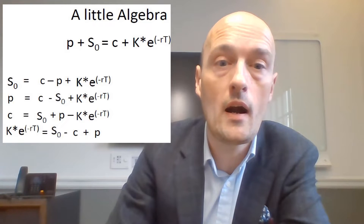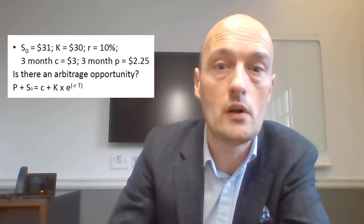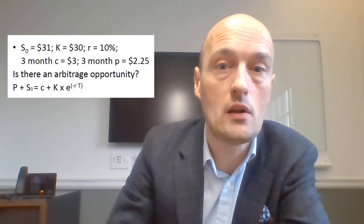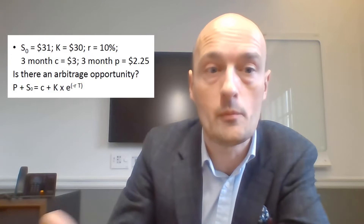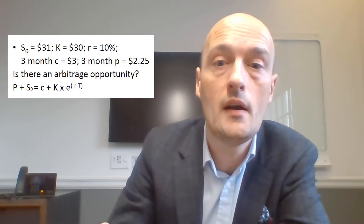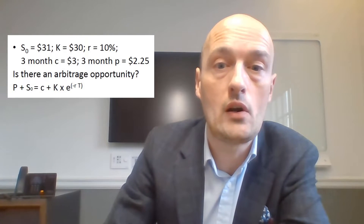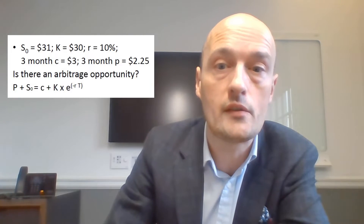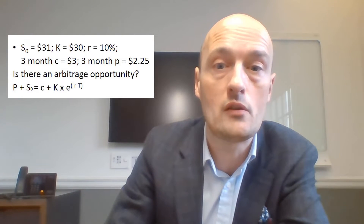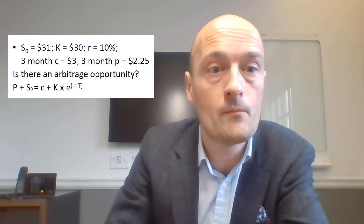Let's walk through a quick example. We have an underlying trading at $31, and put and call options available with a strike of $30. The interest rate is 10%, and there is a three-month call option trading at $3. The put option is trading at $2.25. We ask ourselves: is there an arbitrage opportunity?